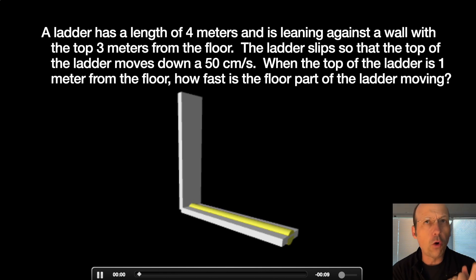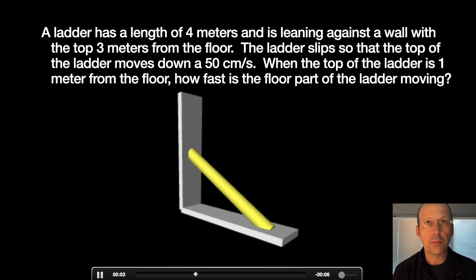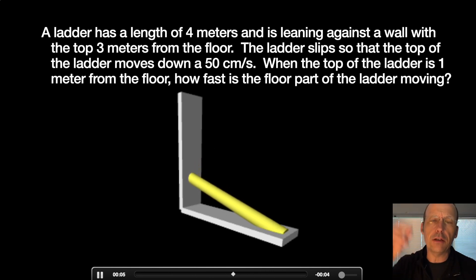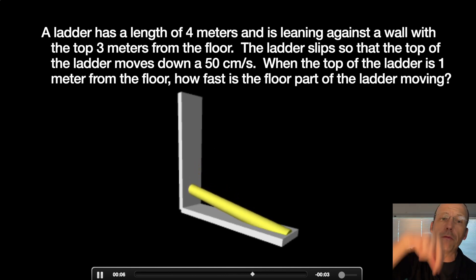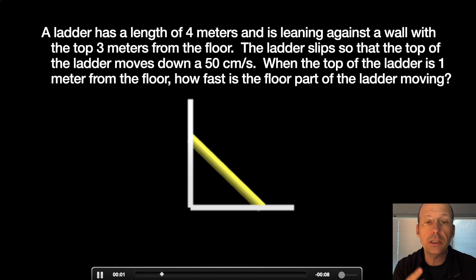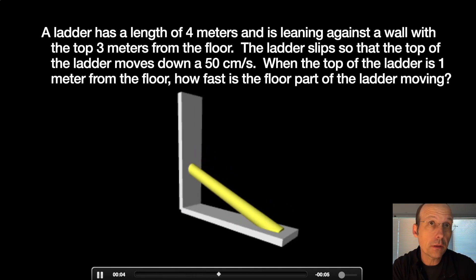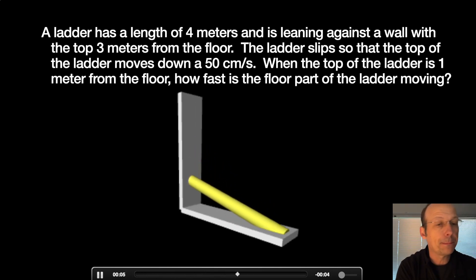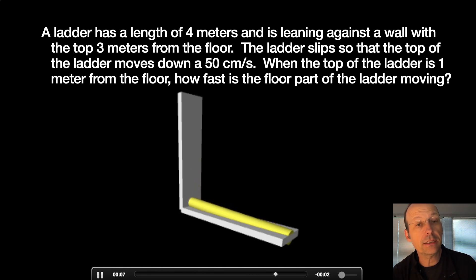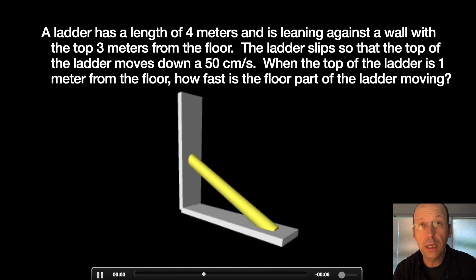The ladder has a 4 meter length and it's 3 meters from the floor — these are just values I made up. The top is moving down at 50 centimeters per second, or half a meter per second. The question is: when the ladder is 1 meter from the floor on the left side, how fast is the right side — the floor part — moving?